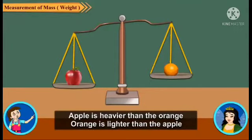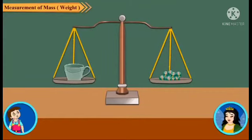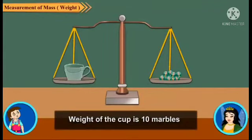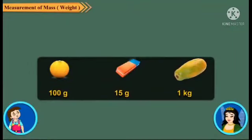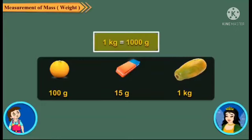What happens when after putting objects on the pans, they remain on the same level? Obviously this means the objects have equal weights. Observe the balance now. Let us measure the weight of this cup using marbles. Put the cup on any of the pans. Now on the other pan put some marbles. The pans are still not in the same level. Put some more marbles till the pans come to the same level. We see that there are 10 marbles in the pan, so the weight of the cup is 10 marbles. Do we have any standard unit of measuring weight?